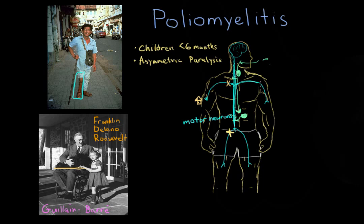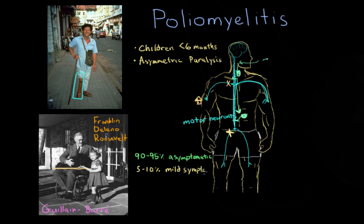Not everybody who contracts polio experiences this degradative damage to their motor neurons. In fact, 90 to 95% of people who are acutely infected are asymptomatic — they have no symptoms. About 5 to 10% of people get only mild symptoms.